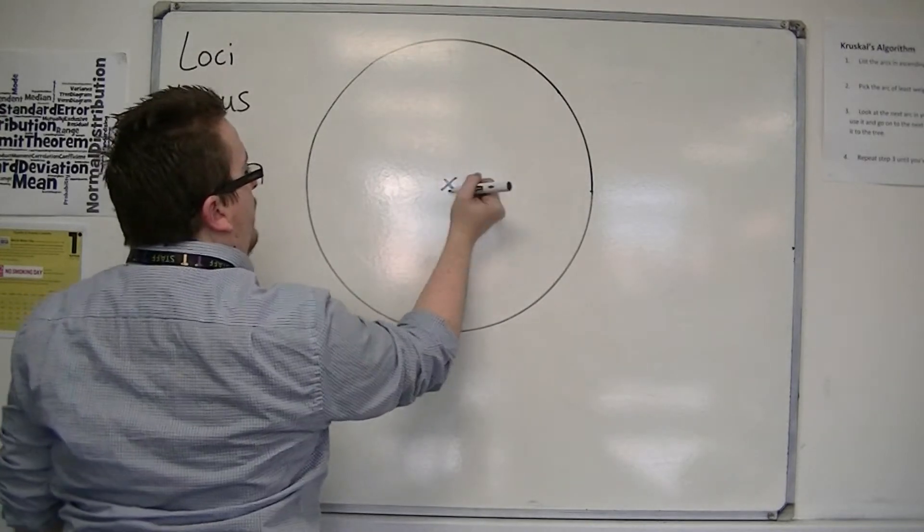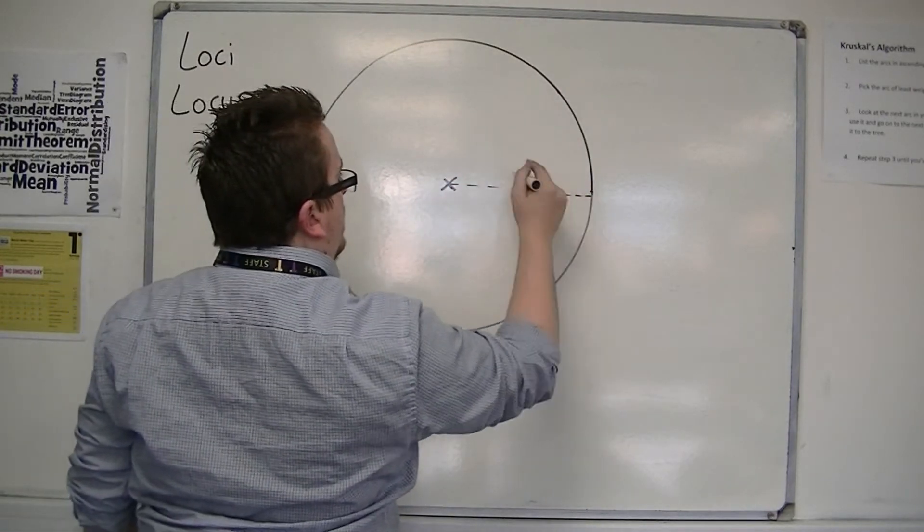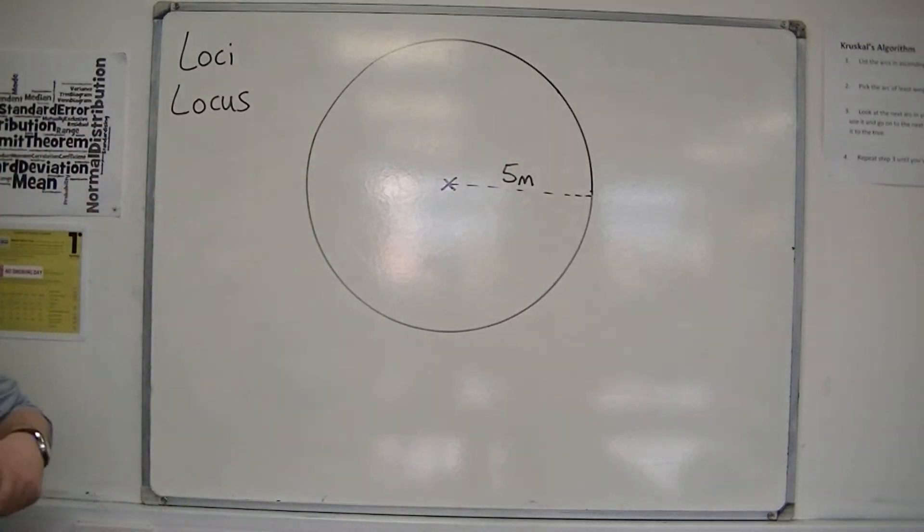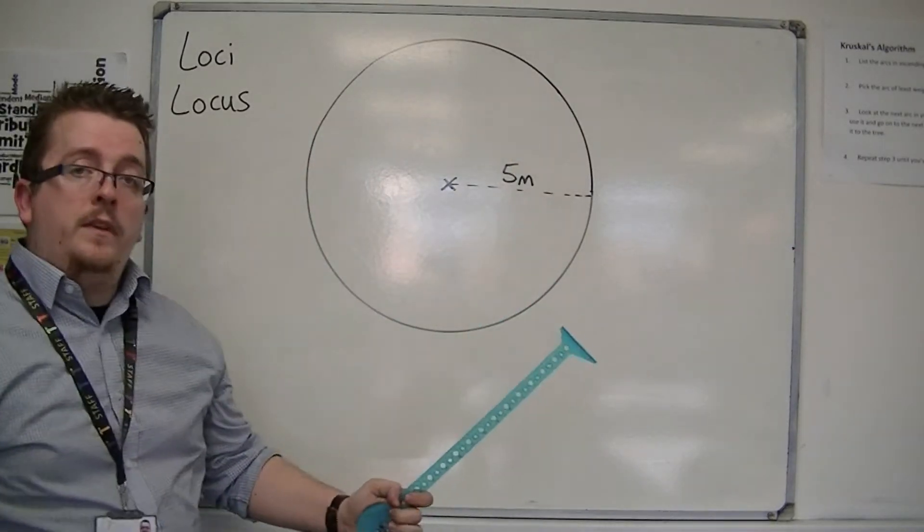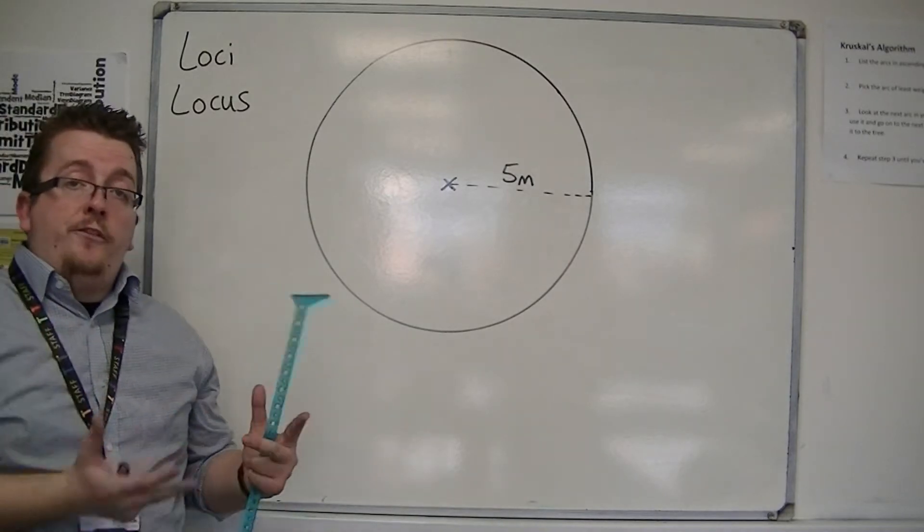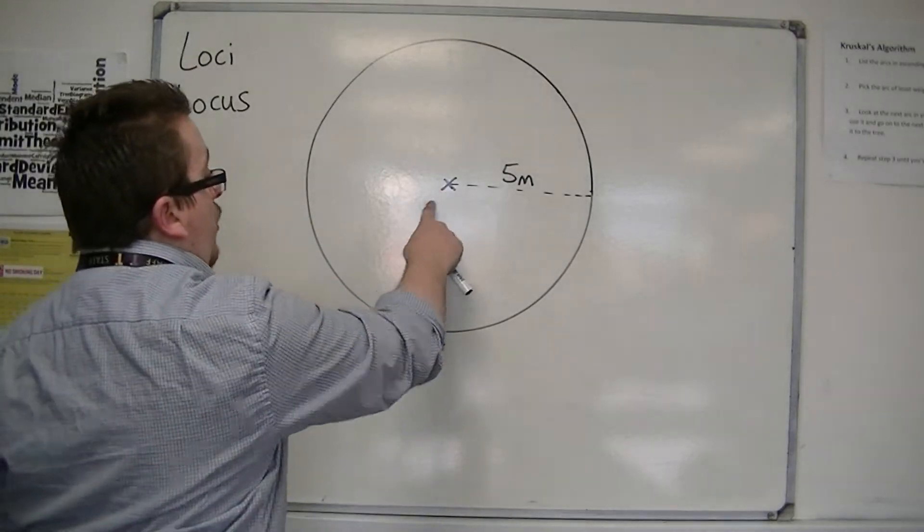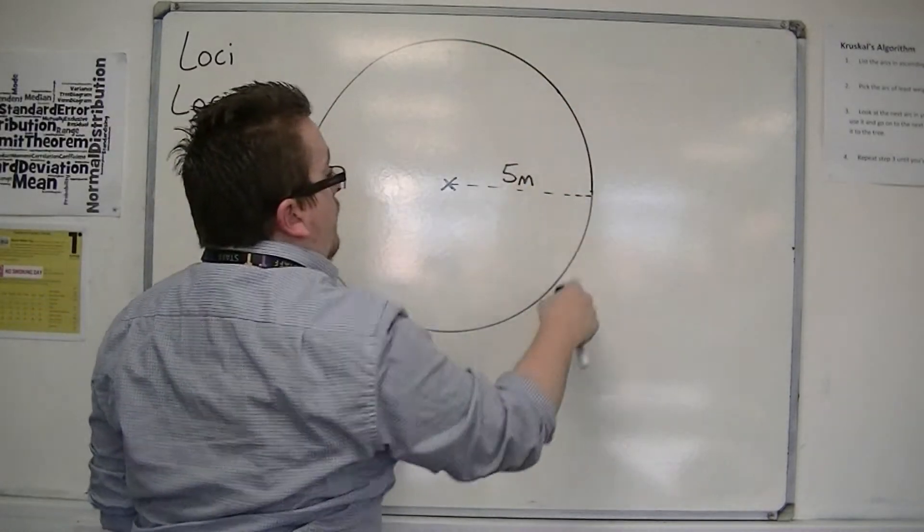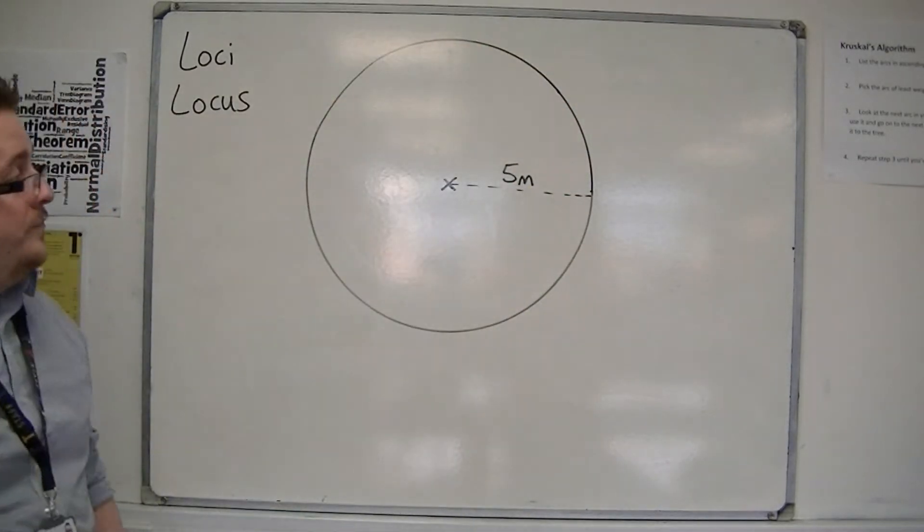So around this point, constructs a circle like so. So if you're going to stand five meters away from a particular object, then you need to be somewhere on this circle.